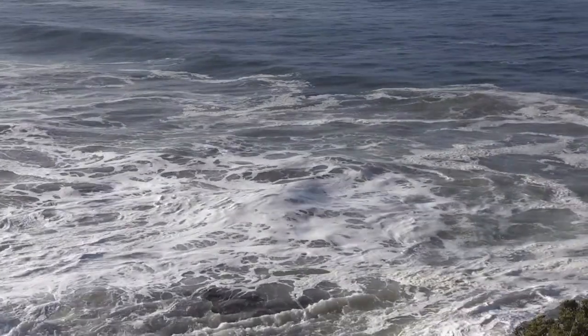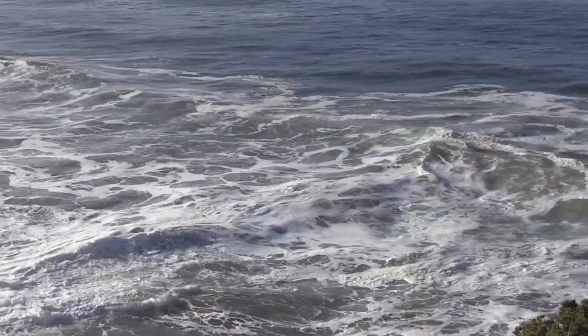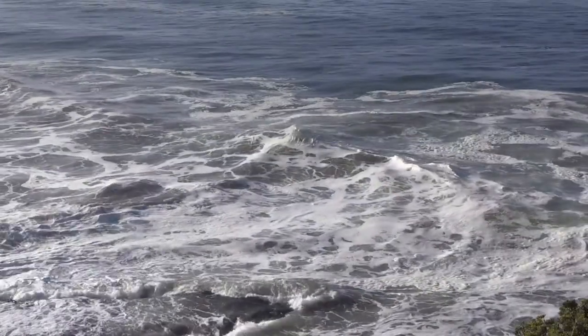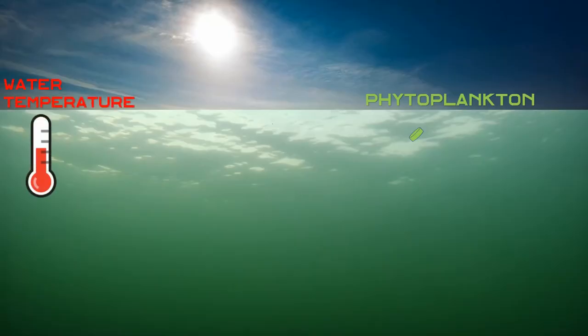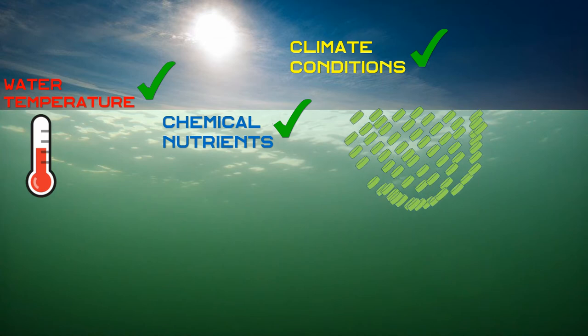The white sea foam that you sometimes find floating on the surface is caused by wave action stirring up lipids from a bloom of phytoplankton. Blooms occur when the water temperature and abundance of chemical food dissolved in the sea becomes ideal for the phytoplankton and they rapidly grow and multiply in number.